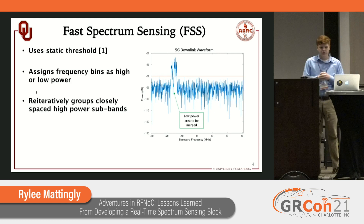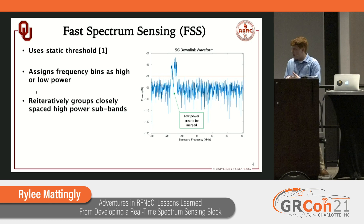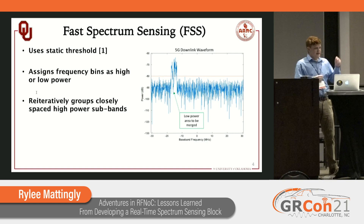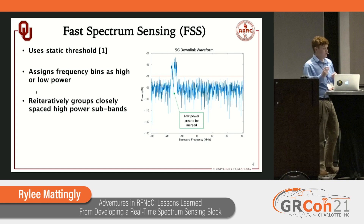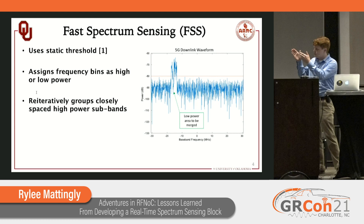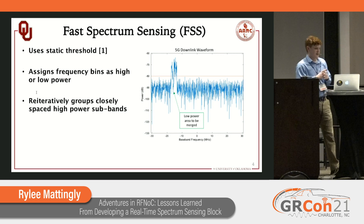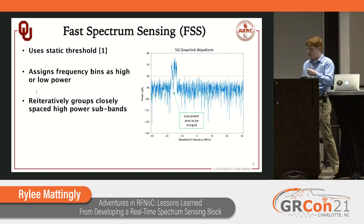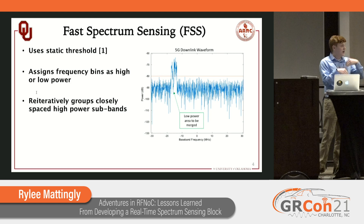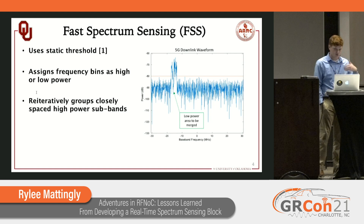What is fast spectrum sensing? In this iteration, we use a static threshold developed from a priori knowledge of the spectrum. We take a frequency snapshot and assign each frequency bin as either high power or low power based on that threshold. For the narrow low power bins, we want to reiterate through this spectral frame and merge the closely spaced high power bins together. Our solution set is the set of low power bins, and going ahead and eliminating those very narrow band low power bins saves some processing later on.